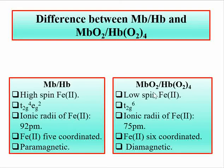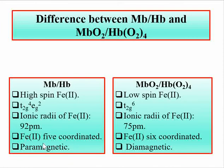In the case of oxymyoglobin and oxyhemoglobin, the ionic radii of Fe2+ is 75 picometers, because all the electrons are present in the T2G set. The T2G set has less repulsion compared to the EG set, so the ionic radii are reduced.